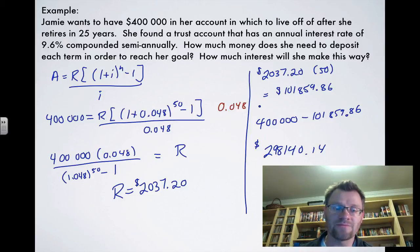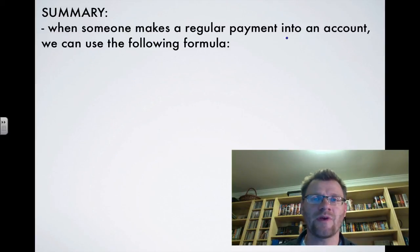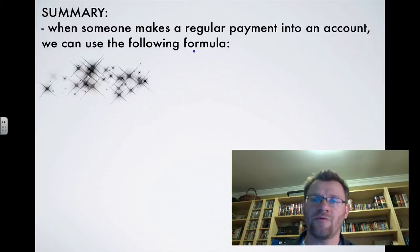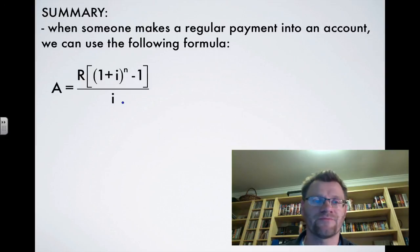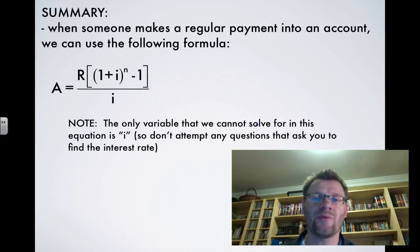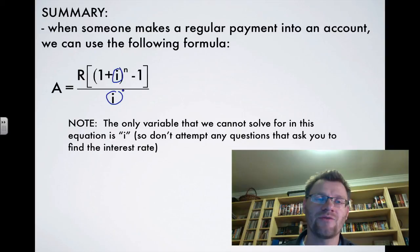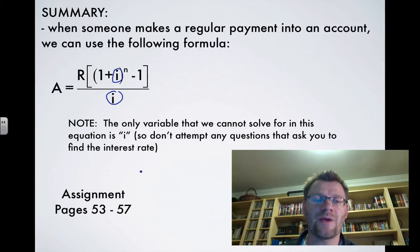In summary, when someone makes a regular payment into an account, we use the formula: A = R × [(1+i)^n − 1] / i, where A is the amount in the account, R is the regular payment, i is the interest rate per period, and n is the number of periods. Note: you cannot solve for i using this formula because i appears in two places — inside the brackets and in the denominator. Your assignment is on pages 53 to 57. Good luck and we'll see you in class.